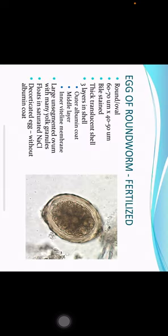Eggs and larvae in stool sample. Fertilized egg of roundworm: it is round to oval in shape, 60 to 70 micrometers by 40 to 50 micrometers in dimension. It is bile stained. The fertilized egg of roundworm has a thick translucent shell with three layers: outer albumin coat, middle layer, and inner vitelline membrane. Inside there is a large unsegmented ovum with many yolk granules. The fertilized egg of roundworm floats in saturated solution of common salt.